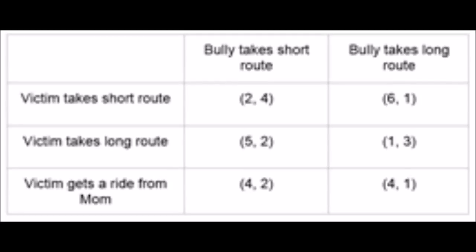However, it is important to note that this payoff matrix can be reduced, as the victim's strategy of hiring a bodyguard is always dominated by the strategy of getting a ride home from mom. Thus, the victim can rule out hiring a bodyguard. The reduced payoff matrix is shown.